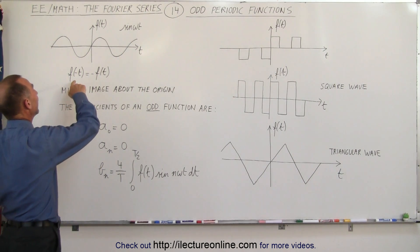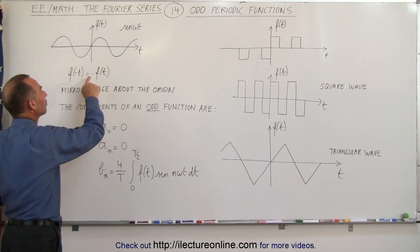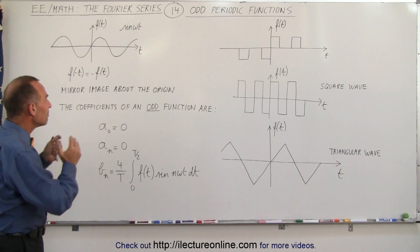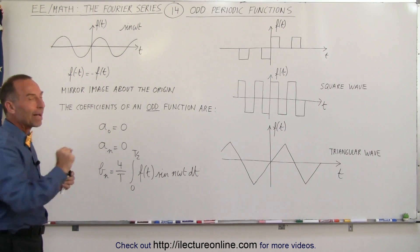Whenever we plug in a negative t for every t value, that's equal to the negative of the function. So what does that mean? It means that there's a mirror image about the origin.